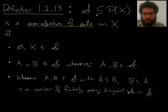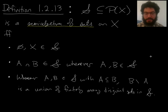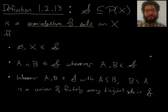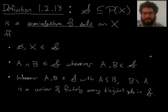Before I get into the definition, the way I like to think about what a semi-algebra of sets is — now that I've gone through this — is that it's like an algebra of sets, but it's just not closed under unions yet. And it will be if you just close it under unions. A semi-algebra of sets is a collection of sets that's just waiting for you to throw in all the unions of things that are in it, so that you can make it into an algebra of sets.